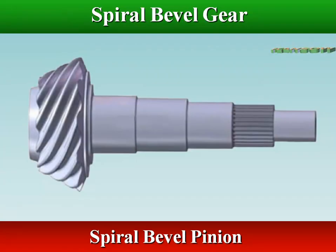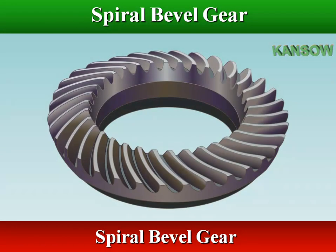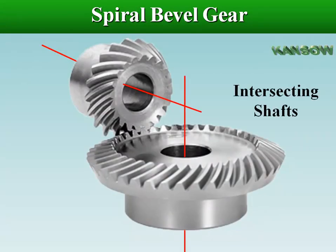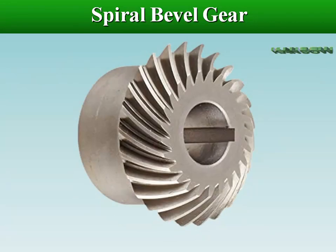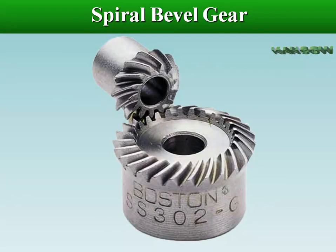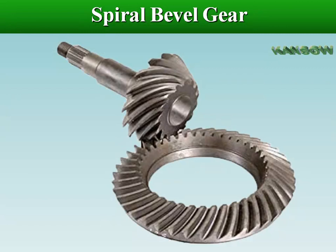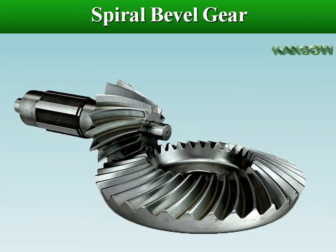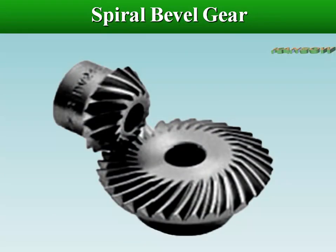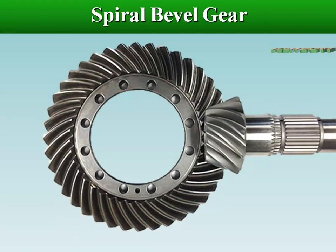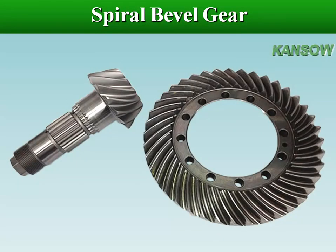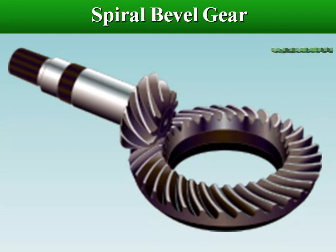Spiral bevel gears have teeth cut in helical form with the pitch surface being conical. They are mounted on shafts whose axes are intersecting. Spiral bevel gears have curved teeth set at an angle to radial lines, which allow contact to develop gradually and smoothly. They have more contact length and area and less power transmission efficiency compared to straight bevel gears. They are useful for high speed applications and others requiring less noise and vibration. They are difficult to design and costly to manufacture, as they require specialized machinery, and they produce more thrust load on shaft bearings than straight bevel gears.